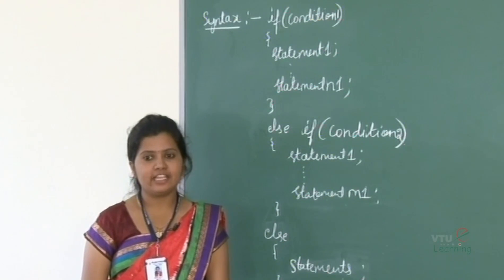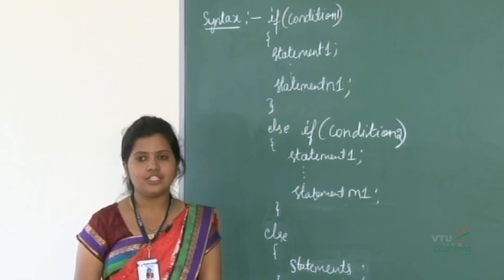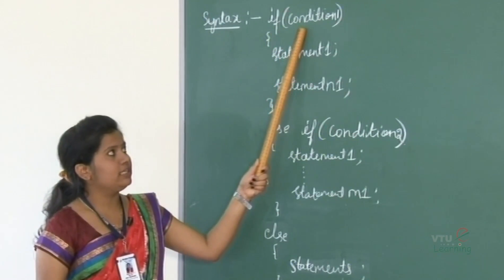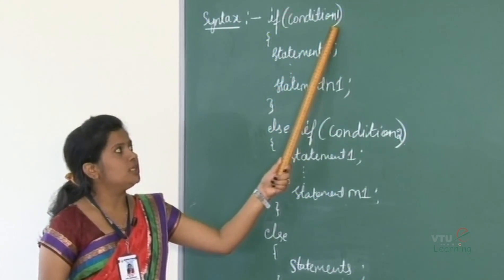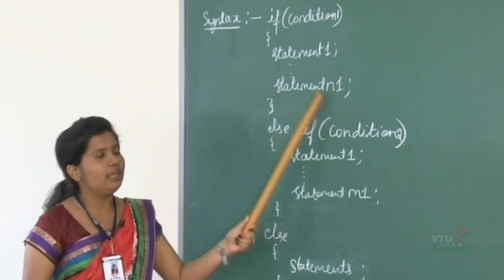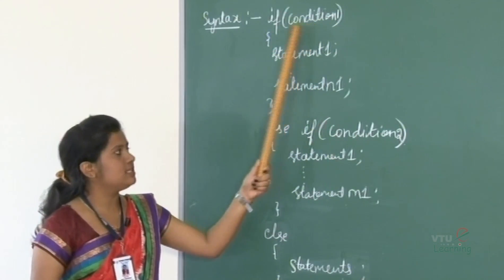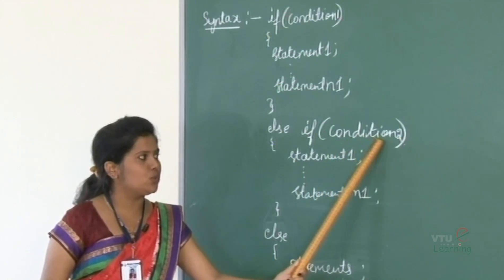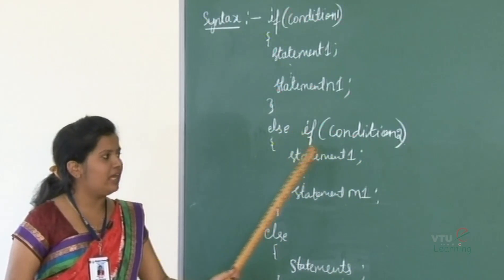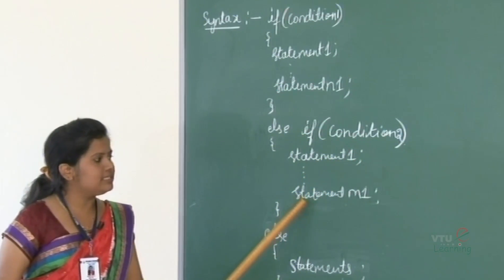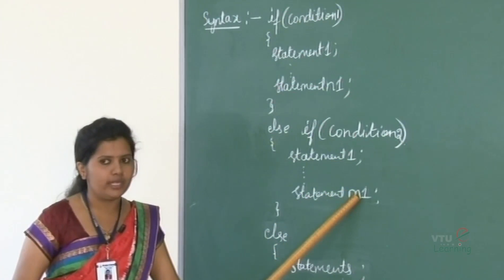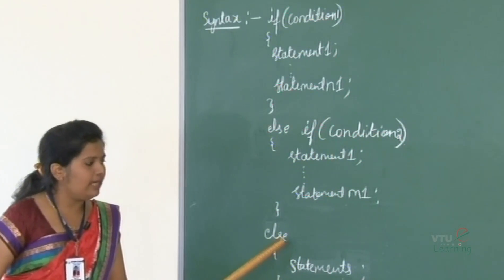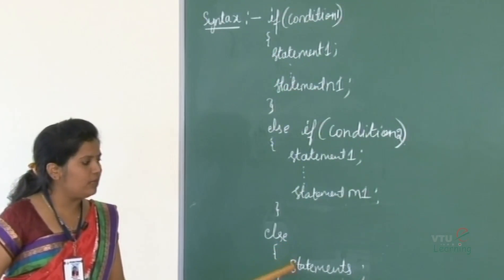Now, let's discuss the syntax of if and if-else conditional control constructs. The syntax is: if, followed by condition 1. If this condition is true, the statements in the if part will be executed. If this condition is false, control comes to the else-if part and checks the condition again. If this condition is true, the statements in the else-if part will be executed. If condition 2 is false, then the control comes to the else part and those statements will be executed.